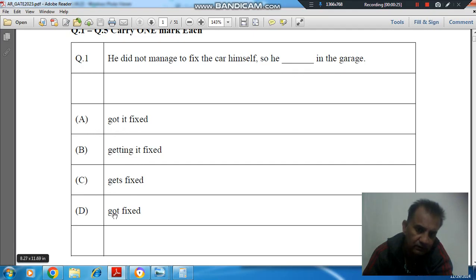gets fixed. Option D: got fixed. So here, past indefinite tense is used - 'did not manage' is past indefinite tense. So here, second form should be used. 'Got' should be there, and 'it fixed'